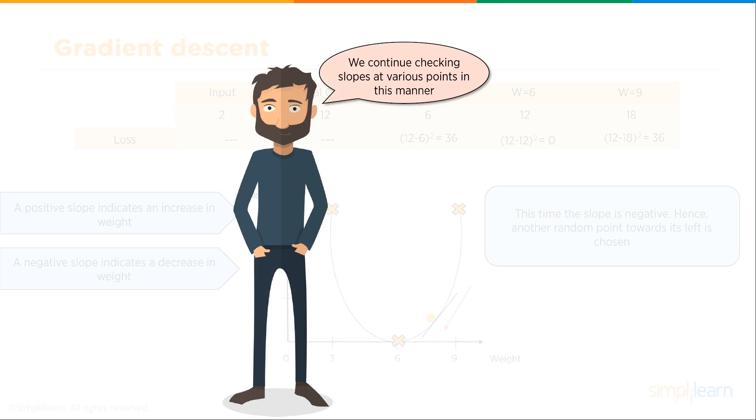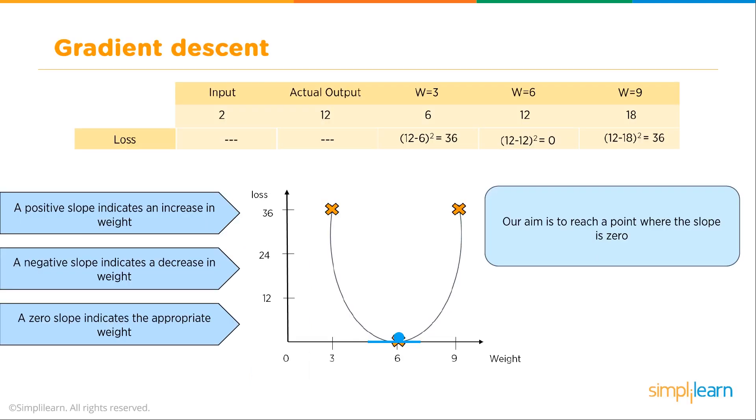This time the slope is negative. Hence, another random point towards its left is chosen. You can see here, we're actually kind of just playing a little high-low game going back and forth with the gradient descent. We continue checking slopes at various points in this manner. A positive slope indicates an increase in weight. A negative slope indicates a decrease in weight. A zero slope indicates the appropriate weight. Our aim is to reach a point where the slope is zero.